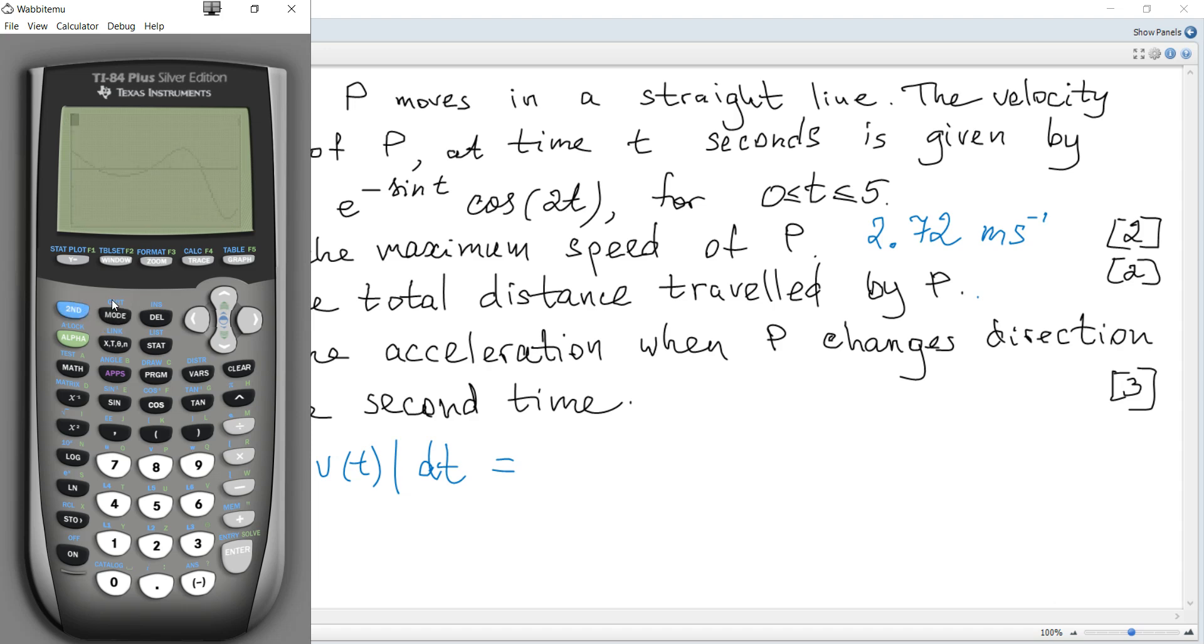Using a calculator, we evaluate the absolute value of V(t) multiplied by cosine of 2t, dt.